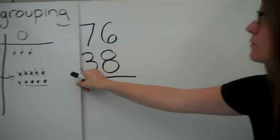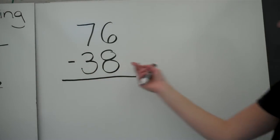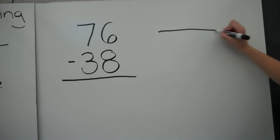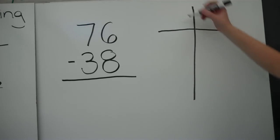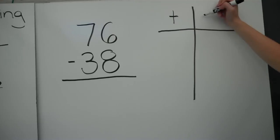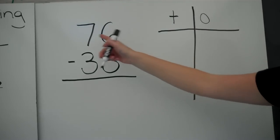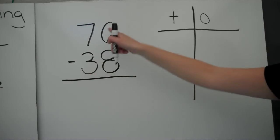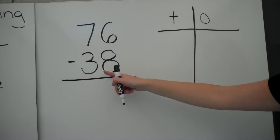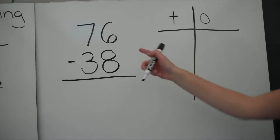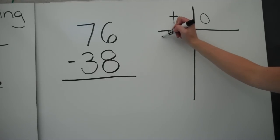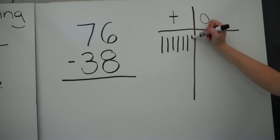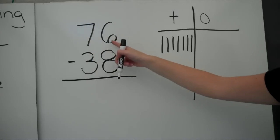Let's try another one. Now I have seventy-six minus thirty-eight. Again, I'm going to draw my place value blocks. I know that seventy-six is greater than thirty-eight — seventy-six is the total and I'm taking away thirty-eight. I'll draw one, two, three, four, five, six, seven tens and six ones.